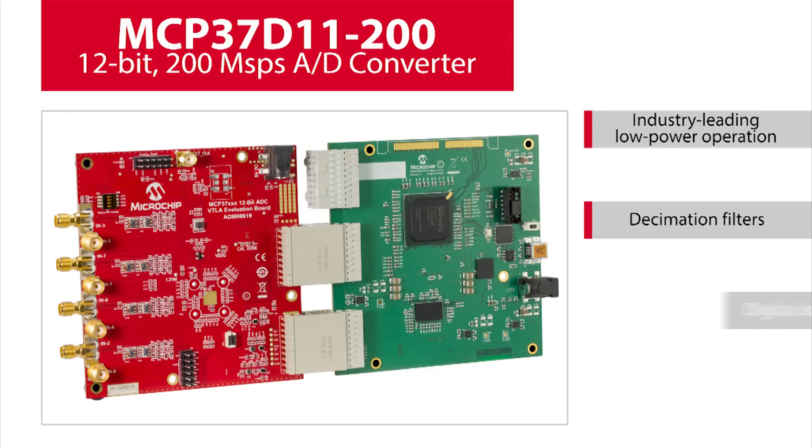Microchip Technology's MCP37D11-200 is a 12-bit 200 mega samples per second A to D converter that has industry-leading low power operation with a high integration of digital processing functions such as decimation filters, a digital down converter, and a noise shaping re-quantizer.